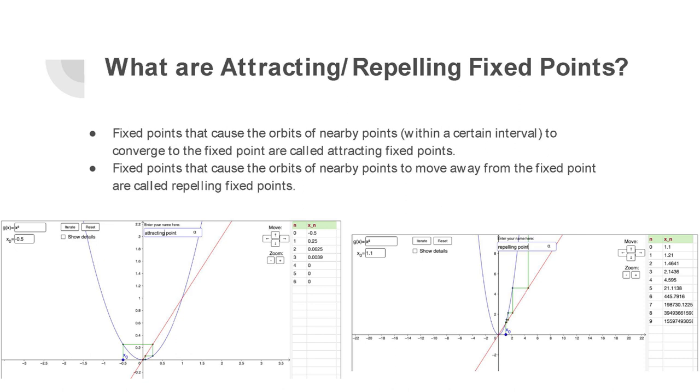For a repelling fixed point, it would be here. This is an example. We have a fixed point at 1,1, and you can see we start at x naught at 1.1, and it repels the orbit as it goes away.